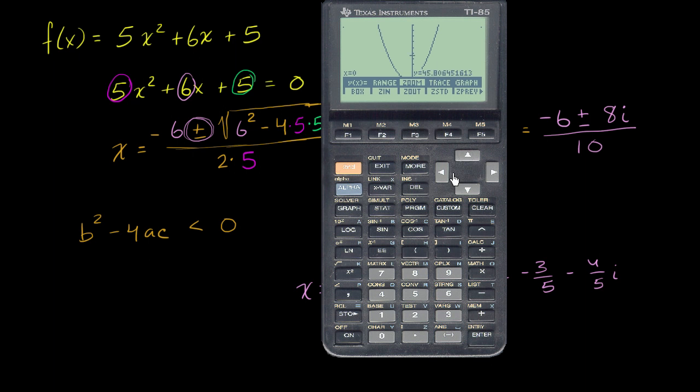Let me change the range to see this better. Let's make x min negative 5, x max positive 5, y max equal to 20, y scale 2. There we see, it does not intersect the x-axis. This does not have any real roots, but it has two non-real complex roots.